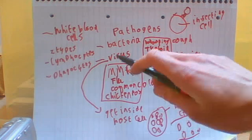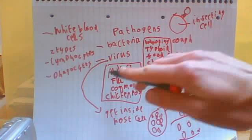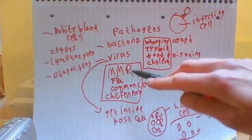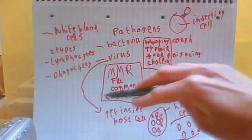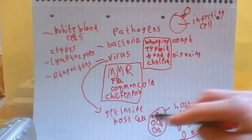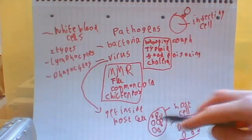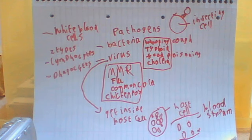You've also got certain infections that are caused by viruses as well, so you've got MMR, which is measles, mumps, rubella, flu, common cold, and chickenpox. How viruses work is they get inside the host cell and then they multiply. They use the host cell's equipment to multiply, and then what they do is they end up bursting the host cell, so they're released into the bloodstream.